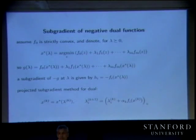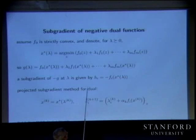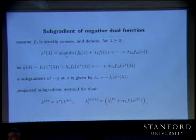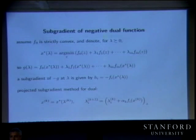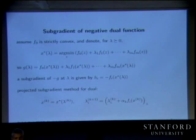If f_i is negative, that means the i-th inequality constraint is satisfied. If it's positive, it means it's violated. So h_i is a slack in the i-th inequality: if h_i is positive, the constraint is satisfied; if h_i is negative, it is violated by that amount.